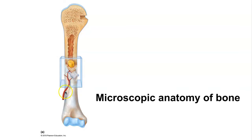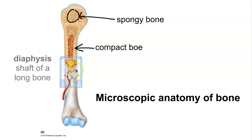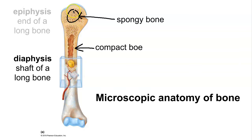In this video we're going to take a look at the microscopic structure of bone. Recall that there are two different types of bone: compact bone and spongy bone. Regardless of the bone shape, any shape of bone will have both compact bone and spongy bone. In the case of a long bone, compact bone is found in the diaphysis and spongy bone fills the epiphysis.